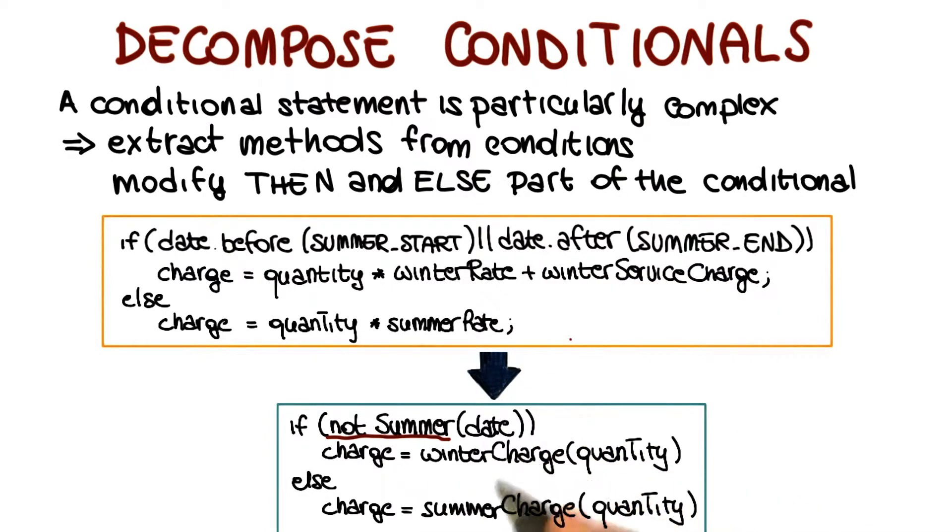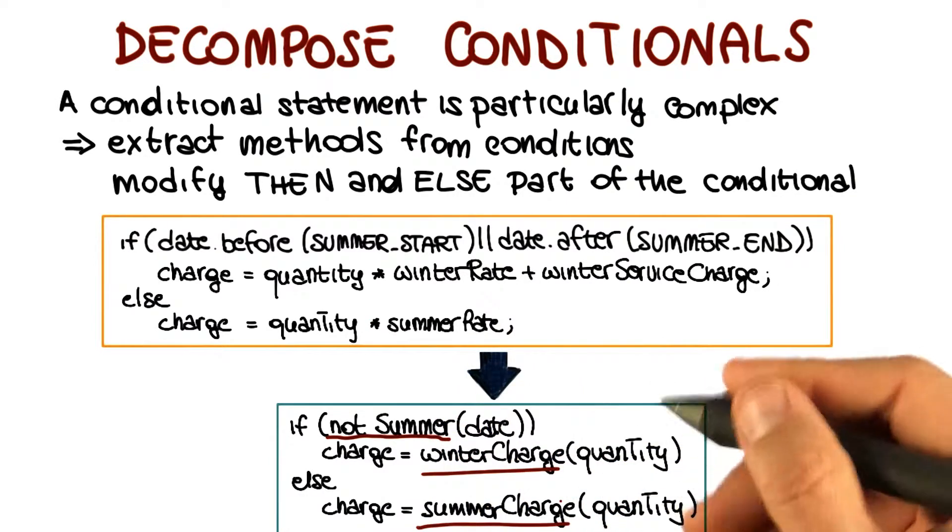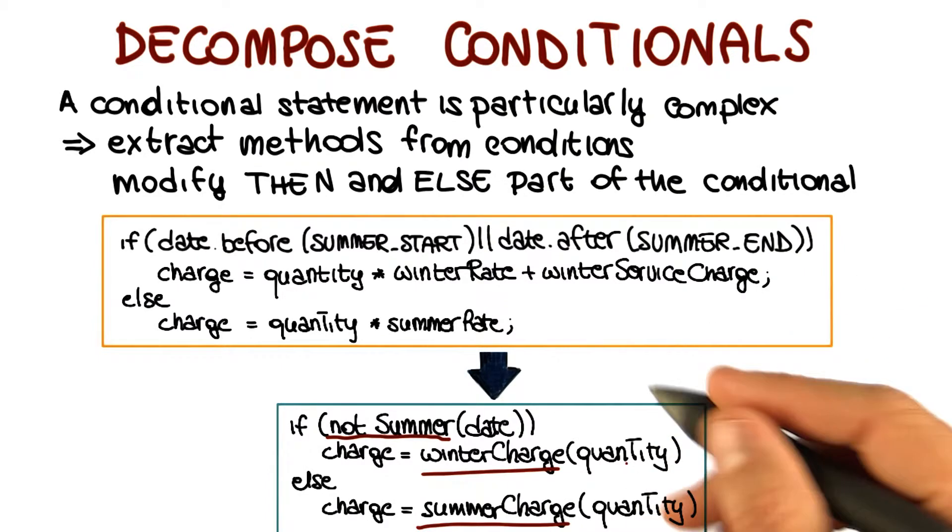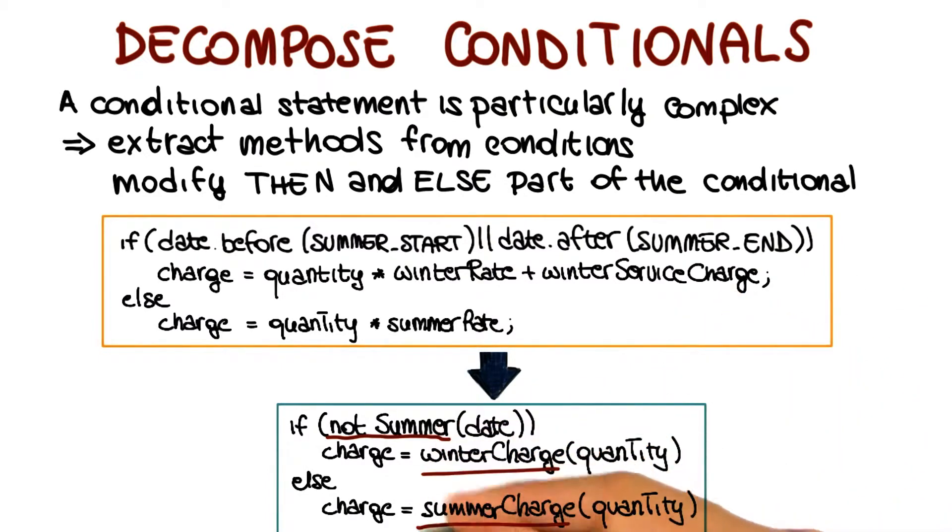And the second thing I do is to take the code that computes the charge, and also in this case, creating suitable methods that compute the winter charge and the summer charge. And I call them exactly winter charge and summer charge, which again is self-explanatory. And then I replace this computation with a call to that method.